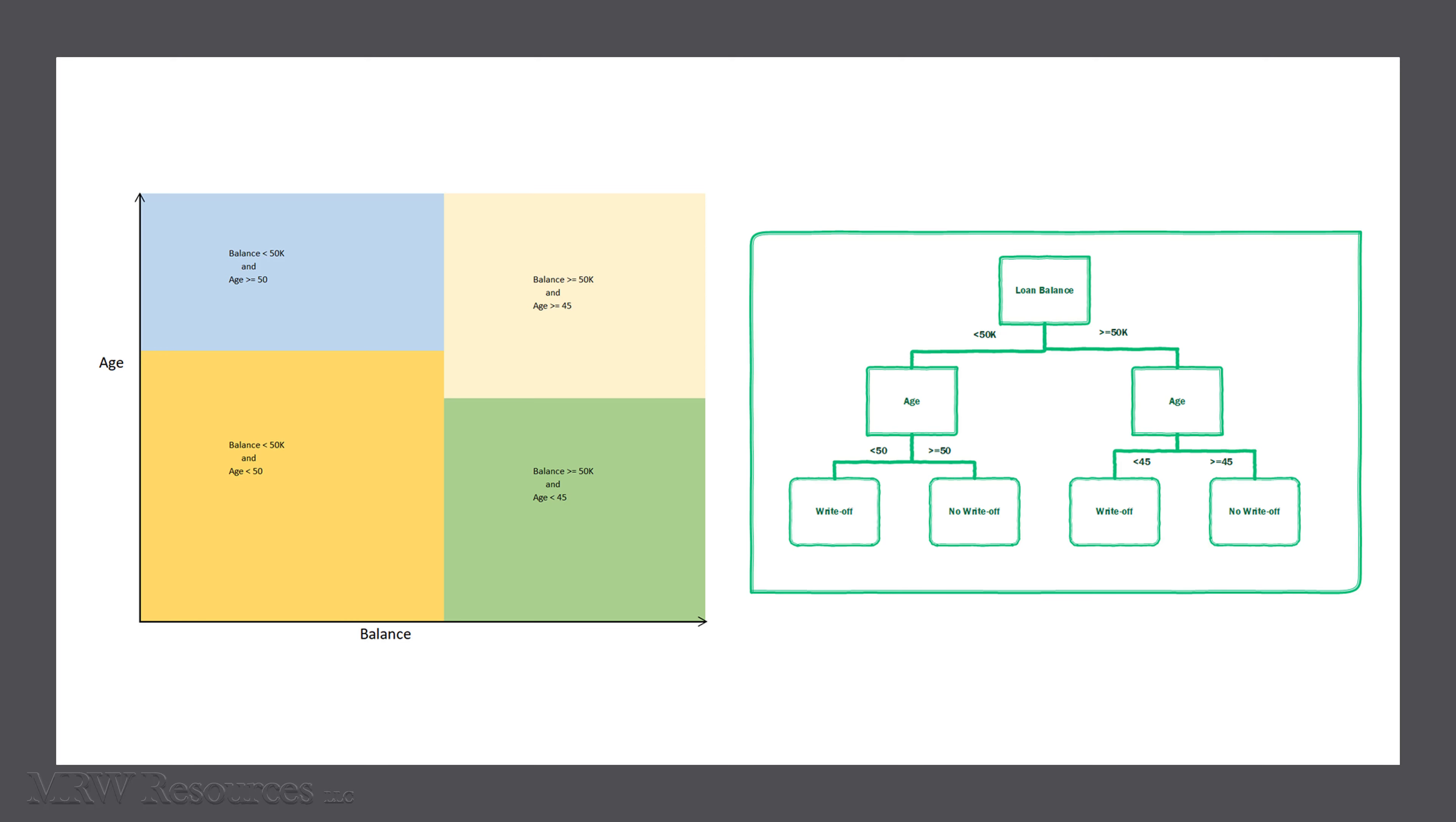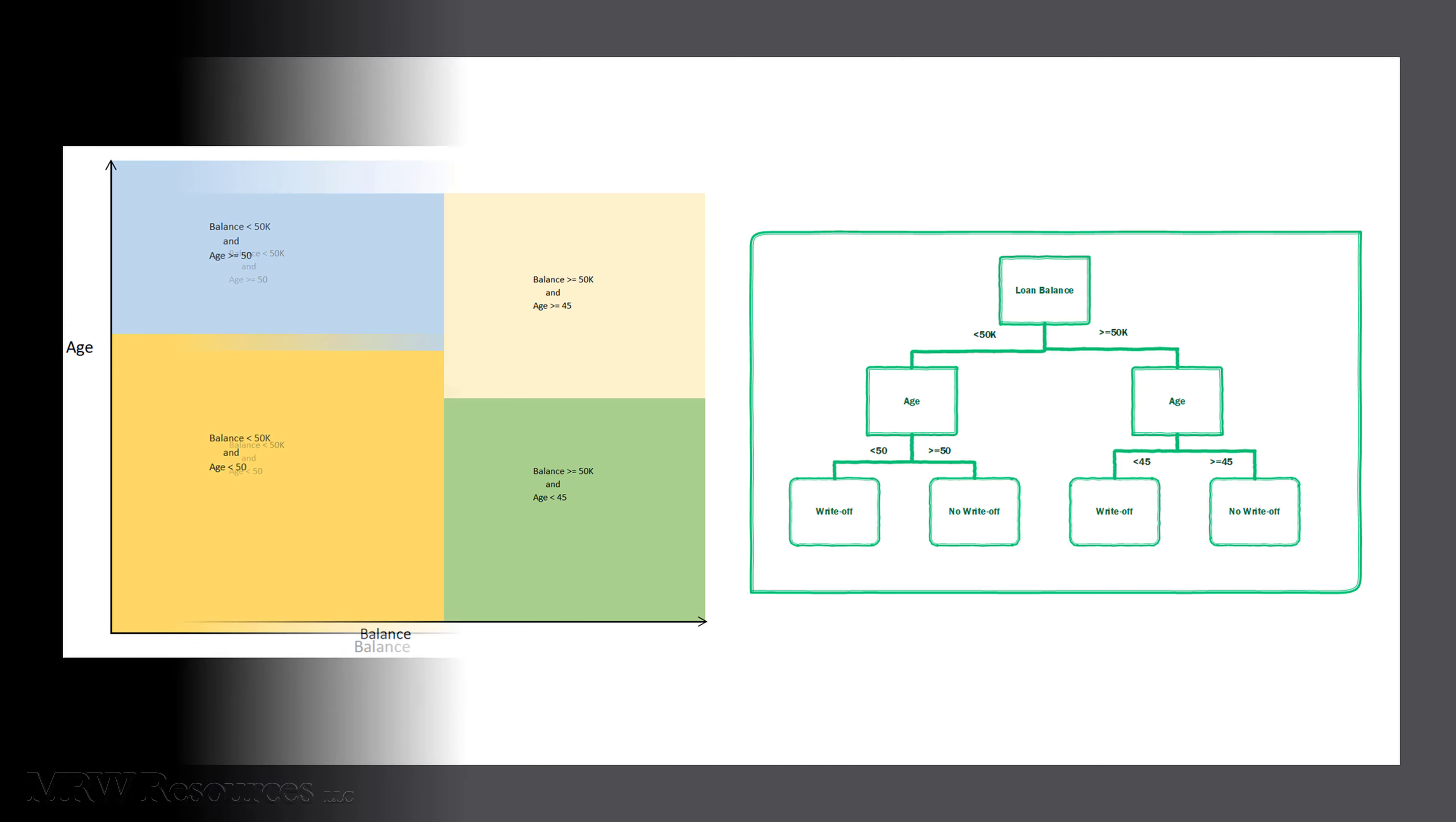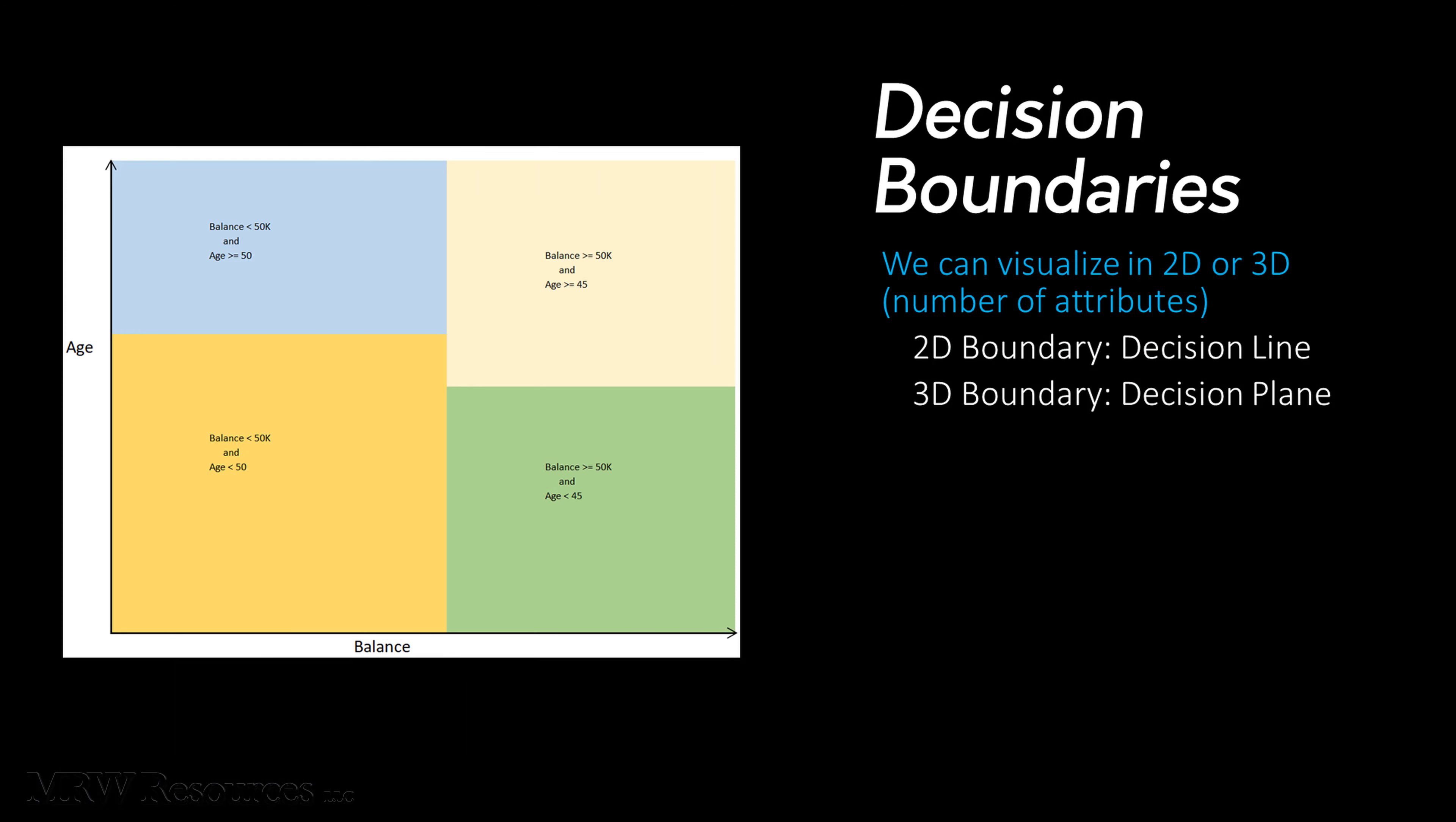We as humans can visualize in two dimensions or even three dimensions. In two-dimensional space, we have a decision line like you see here. In three-dimensional space, if we have three attributes, we have a decision plane. That's easy enough to imagine - consider a Rubik's Cube and the planes that you have between each batch of color blocks.